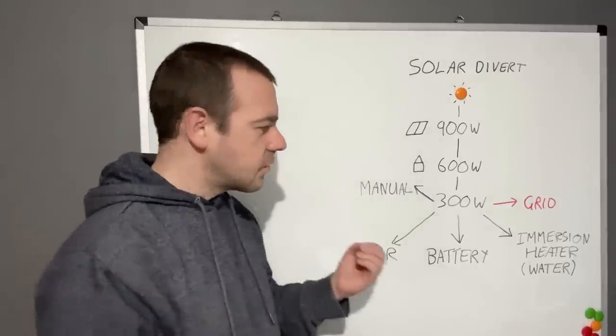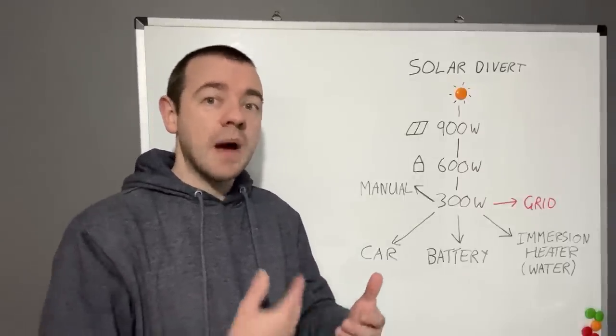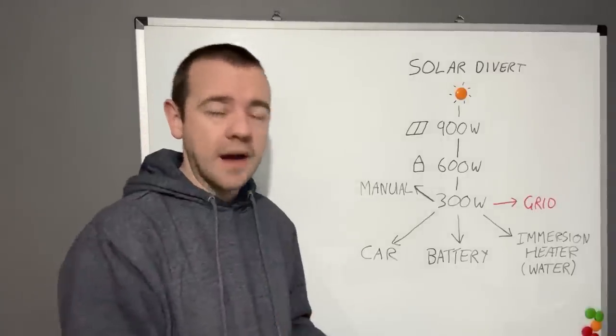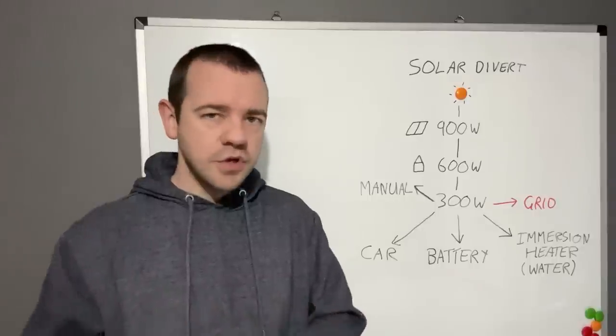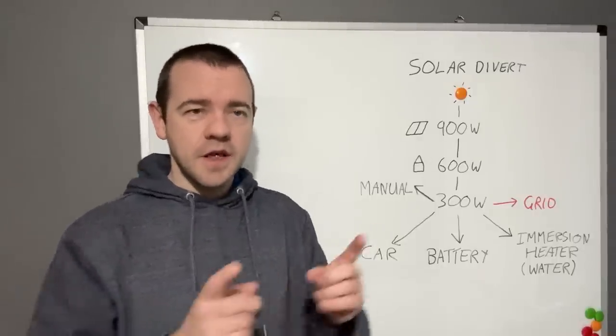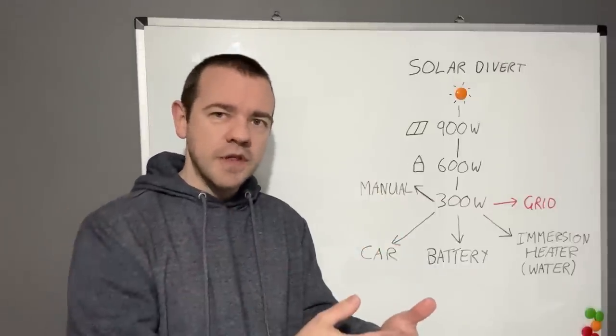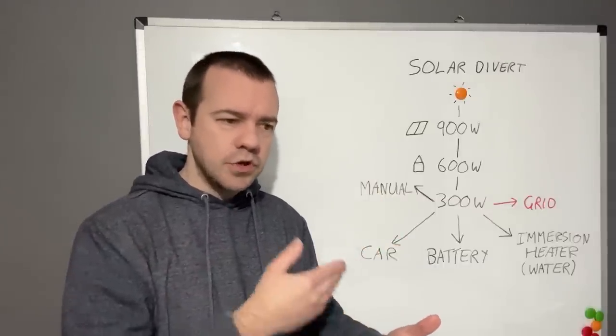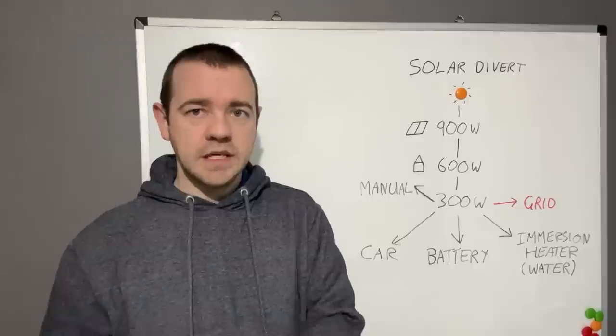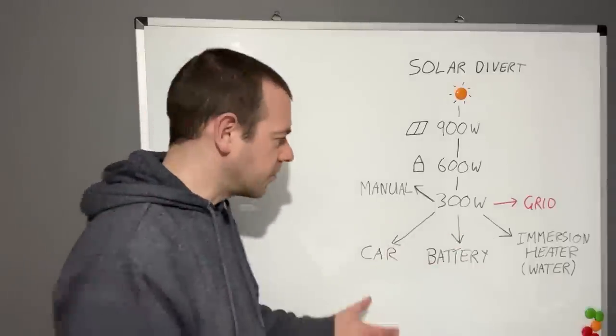The reason why an immersion heater is kind of pointless for me is because I would rather use that excess energy to power the heat pump, which at the moment is running at around 300% efficient for my hot water, than the immersion heater. Because the immersion heater, as I said before, would be at best 100% efficient. The heat pump, 300% efficient. So therefore I would rather put the energy into that because I would only need, well, about a third of the energy compared to the immersion heater to actually heat all the water up. Don't get me wrong, if you've already got it there, use it. But I would rather power that efficient heat pump than an inefficient immersion heater, if that makes sense.